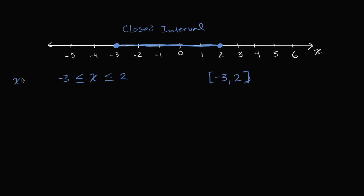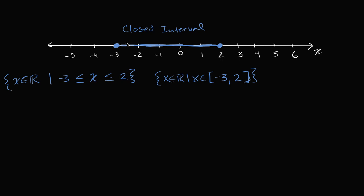Sometimes you might see things written more formally. You might see something like: x is a member of the real numbers such that negative three is less than or equal to x is less than or equal to two. The curly brackets denote a set of values, the epsilon symbol means 'is a member of the real numbers,' and the vertical line means 'such that.' Or you could write x is a member of the real numbers such that x is a member of the closed interval. These are all different ways of denoting the same interval.